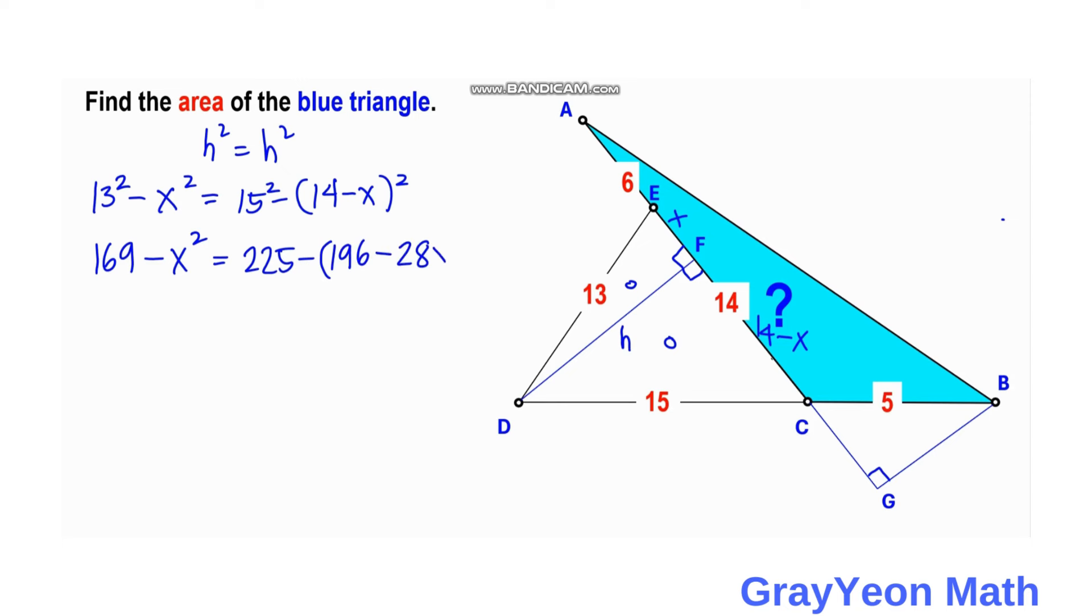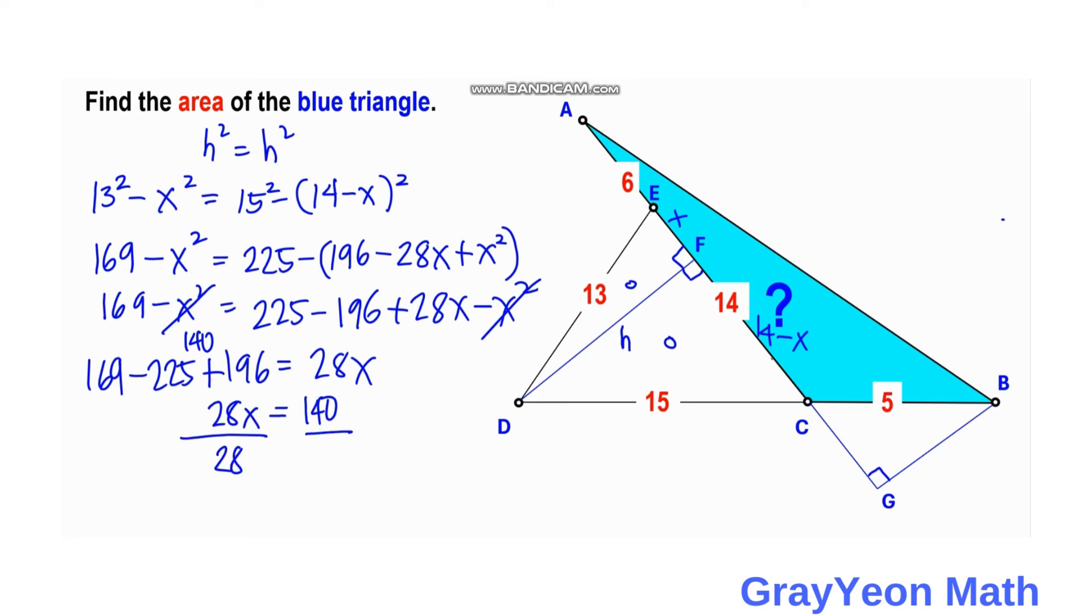169 minus X squared is equal to 225 minus 196 plus 28X minus X squared. So we just need to copy this on the left-hand side. This simplifies to 169 equals 225 minus 196 plus 28X. Let's interchange the left and the right. This gives us 140 equals 28X. And if we divide both sides by 28, this gives us X is equal to 5 units.